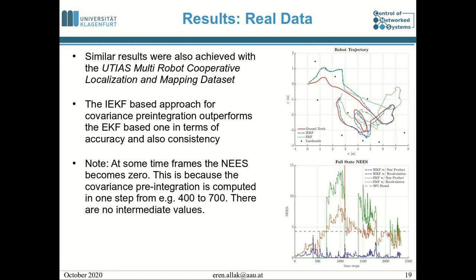We also evaluated our algorithm with real data using the UTIS multi-robot cooperative localization and mapping dataset. Again, the IEKF-based approach outperforms the EKF-based one in terms of accuracy and consistency. The top plot shows the error in the trajectory, and the bottom plot shows the consistency error described by the NES. A small note: the NES value is zero for some time frames, which relates to the one-step computation of covariance pre-integration — for example, from time 400 to 700 there are no intermediate values, as covariance pre-integration takes you directly from one time step to the target time step.